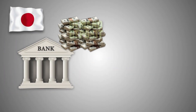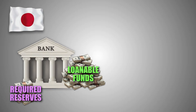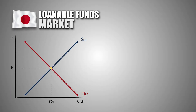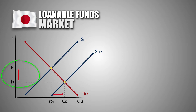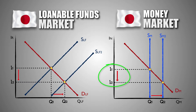Once foreign investors deposit their yen in Japanese interest-bearing assets, Japanese banks will take a portion of each deposit and hold it in required reserves, making the excess reserves available for lending in the form of loanable funds. This increases the supply of loanable funds in the Japanese loanable funds market and drives down Japanese real interest rates. With more reserves available, the supply of M1, M2, and M3 money increases in the Japanese money market, which drives down nominal interest rates.